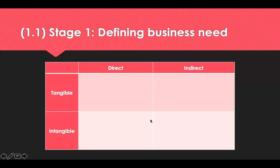A need is something that is required for an individual or an organisation to be able to carry out their objectives. For example, a warehouse worker might need more nuts and bolts, or an engineer might need a component to develop their concept. There are four types of needs: tangible and intangible, direct and indirect.